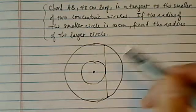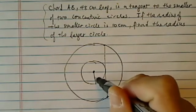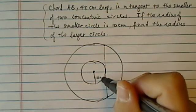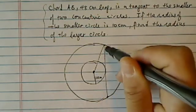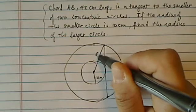Alright, so we're given two concentric circles and the smaller one has a radius of 10 centimeters and the chord is 48. We're asked to find what the radius for the larger circle is. That's called big R here.